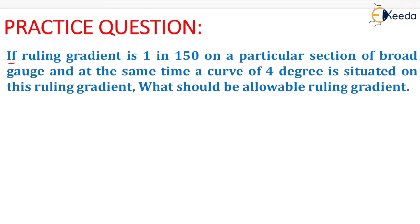The question is: if ruling gradient is 1 in 150 on a particular section of broad gauge, and at the same time a curve of 4 degrees is situated on this ruling gradient, what should be the allowable ruling gradient?